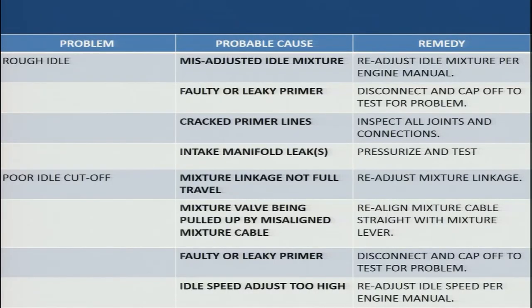Let us see what are the problems we encounter in carburetors during field operation. There may be various problems and snags reported by pilots or observed by engineers during maintenance. Let us see what the common snags are and what the rectification actions are. You may experience rough idle — the engine operation at cruise speed or high throttle may be satisfactory, but idle operation might be rough.